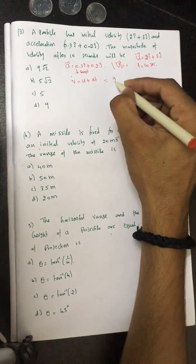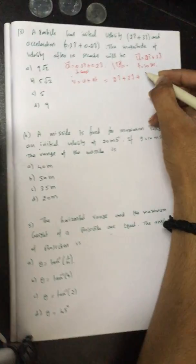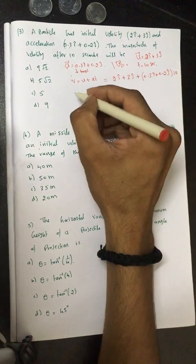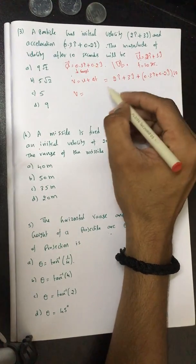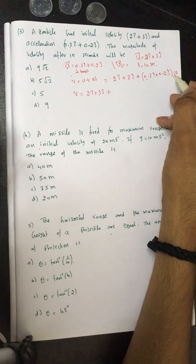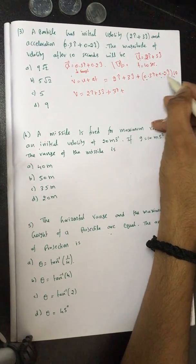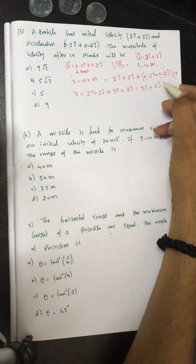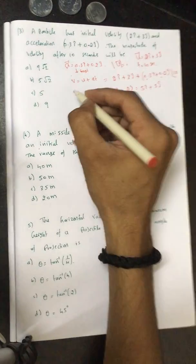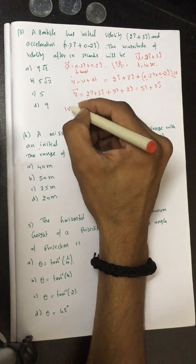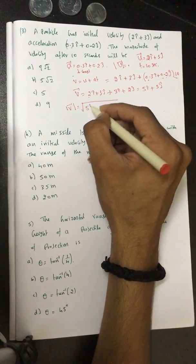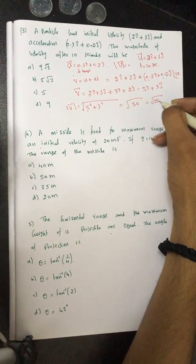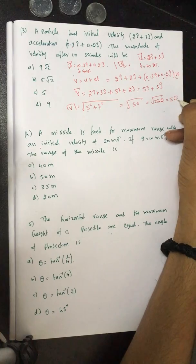So v = u + at implies v = (2 i-cap + 3 j-cap) + (0.3 i-cap + 0.2 j-cap) × 10. This gives (2 i-cap + 3 j-cap) + (3 i-cap + 2 j-cap). Combining: 5 i-cap + 5 j-cap. To find the magnitude, take the square root of 5² + 5² = √50 = √(25 × 2) = 5√2. The answer is 5√2 m/s.